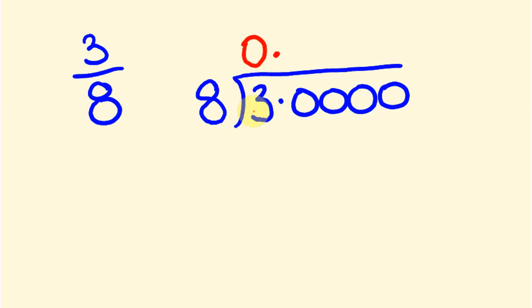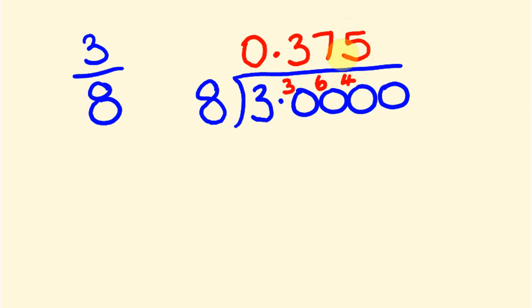We carry the 3 across, so now we have 8 into 30. That goes 3 times because 3 eights are 24, and there's 6 left over. So 8 into 60 — 7 eights are 56, so that's 7, with 4 left over. Now we have 40, and 8 into 40 goes 5 times with no remainder. So we've got what we call a terminating decimal — it's finished, there's no remainder, and the answer is 0.375.